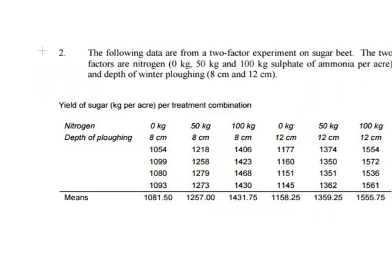Here is a question. The following data are from a two-factor experiment on sugar beet. The factors are as follows: nitrogen, with three levels — 0 kg, 50 kg, and 100 kg of sulfate of ammonia per acre — so this is about fertilizers. And also the depth of winter plowing, either 8 cm or 12 cm. One factor has three levels and the other has two levels. I am going to call the factors N and D respectively.